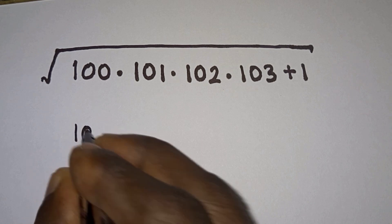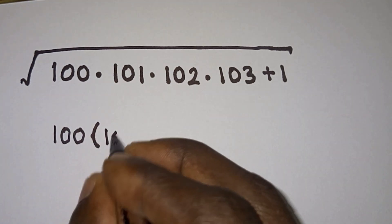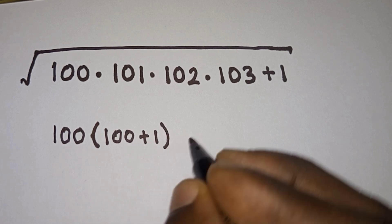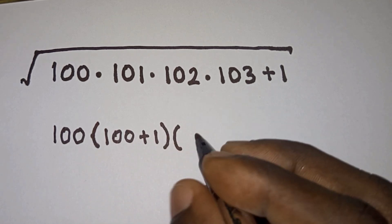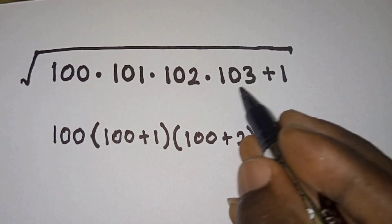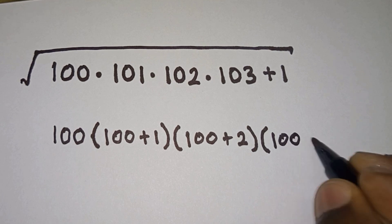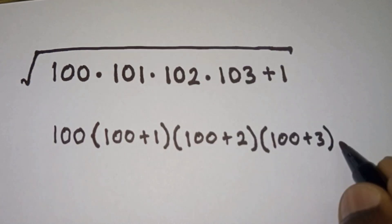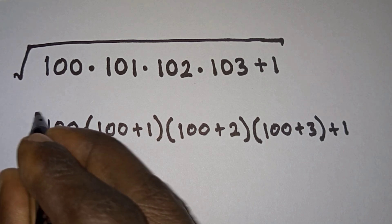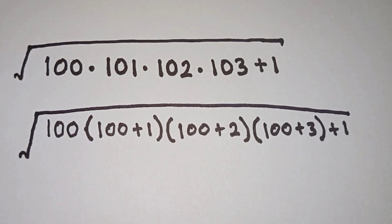We have 100 times 101, but I'm going to write 101 as 100 plus 1, times 102 I'm going to write as 100 plus 2, then times 103 I'm going to write as 100 plus 3, then plus 1.